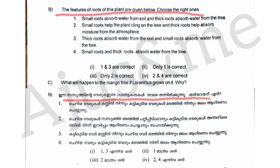Small roots absorb water from the tree and thick roots absorb water from the tree. What is correct? The option is 3 — only option 2 is correct.